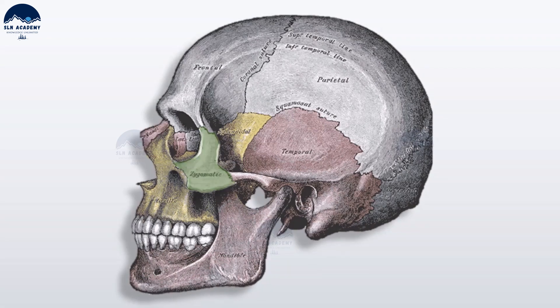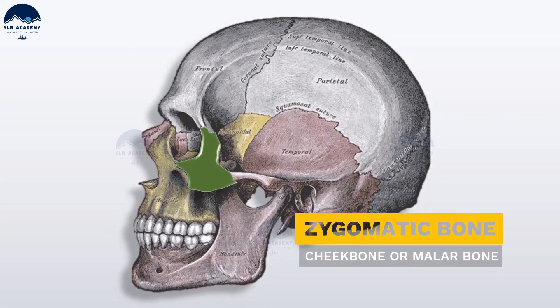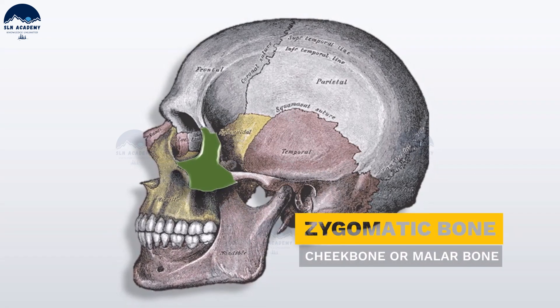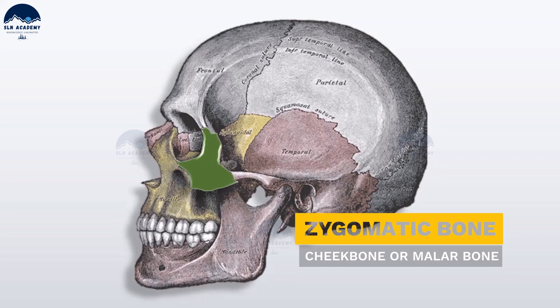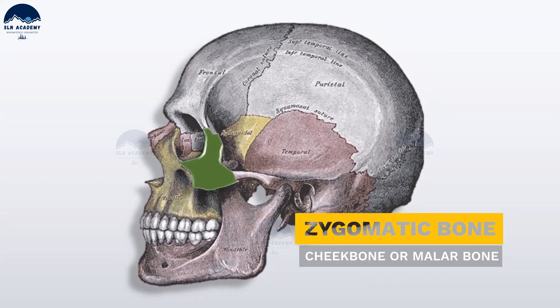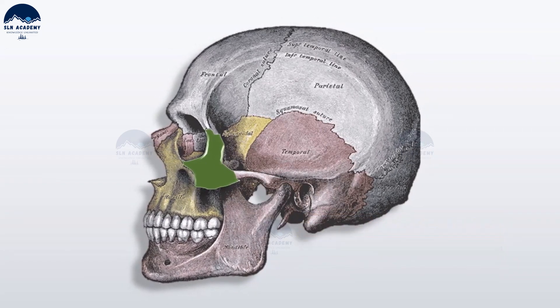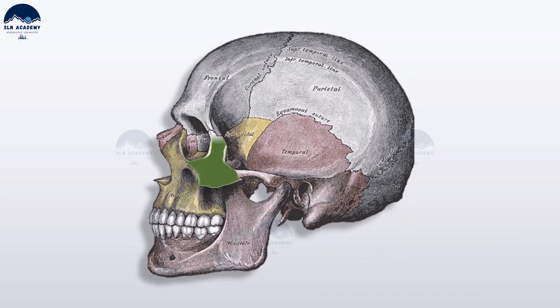Zygomatic bones. Zygomatic bones are the two cheek bones. They are irregular bones which form the shape of the cheek.